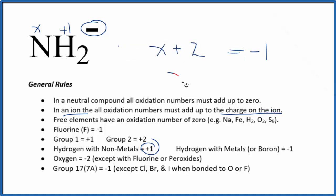We subtract two from each side and we get x equals minus three. So the oxidation number on the nitrogen in NH2 minus, that is going to be minus three.